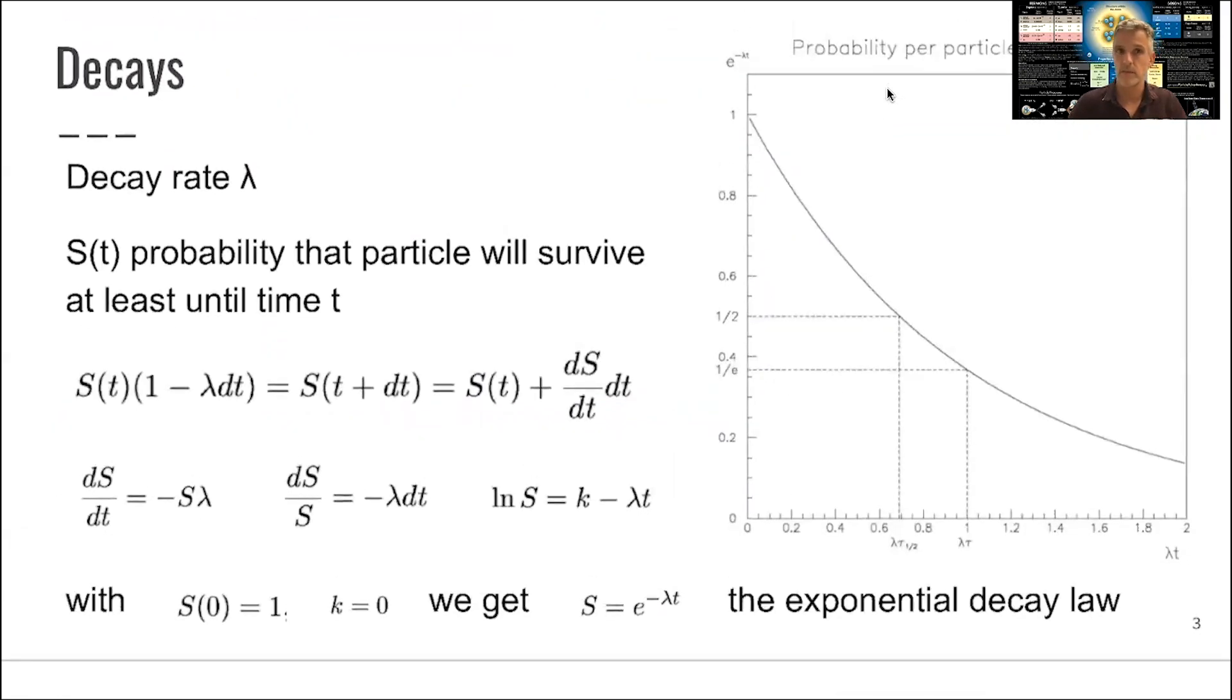So let's talk about decays. We can define this new symbol, the decay rate lambda, and S as a function of time, probability that a particle will survive at least until some time t. The probability at some time t relates to the probability at time t plus delta t by the likelihood 1 minus the decay rate times the time interval delta t. From this, we find that the change of the probability for the particle to survive is proportional to that probability and decay rate.